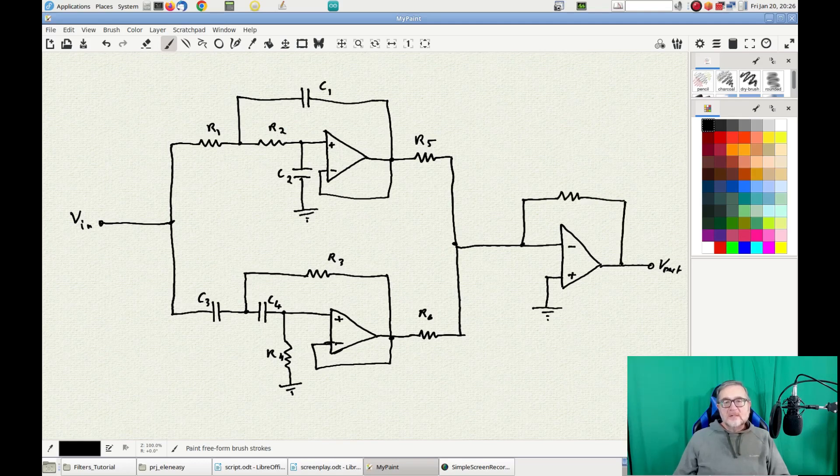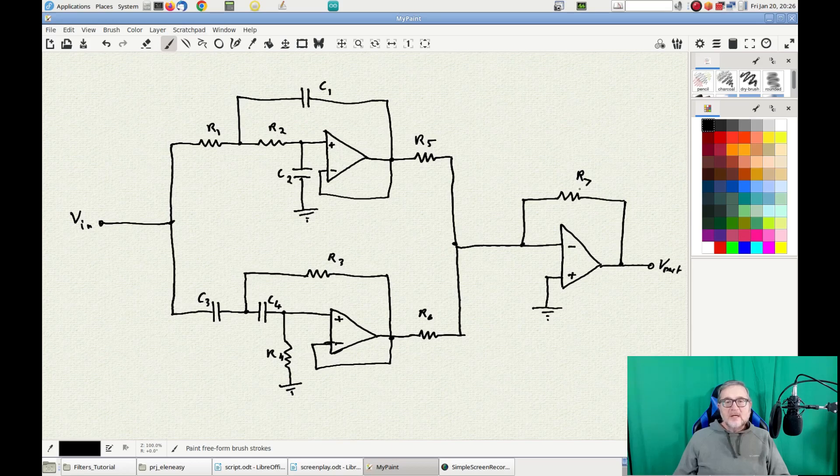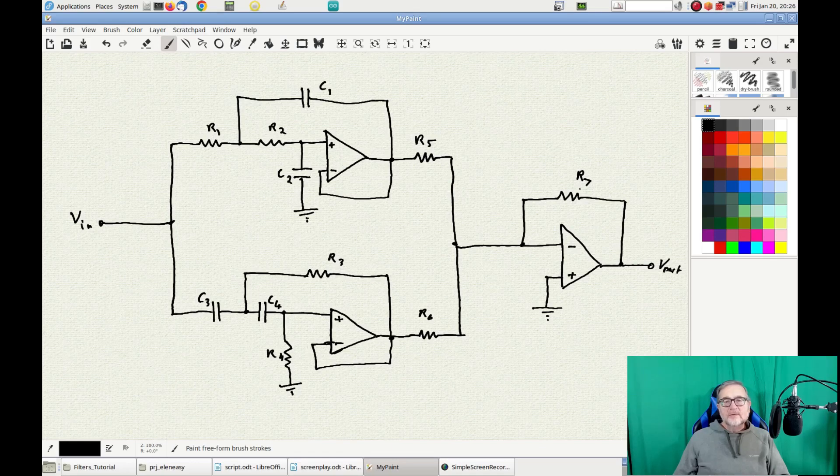If we make R5, R6 and R7 all the same value, we will have a stage that provides an output signal which is the inverse of the exact sum of the two input signals, which come from the two Sallen-Key filters on the left.